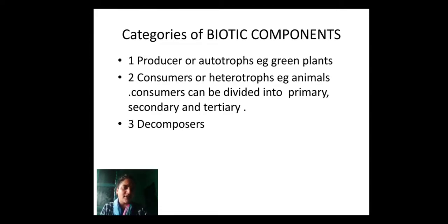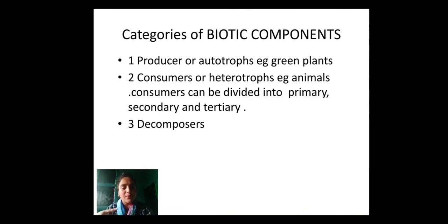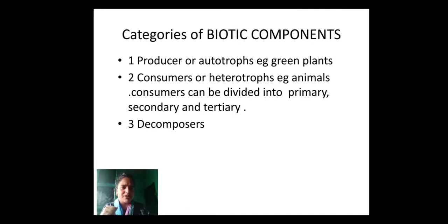Next, we have consumers, or heterotrophs. Example: animals. All the organisms which cannot prepare their own food and depend upon plants directly or indirectly for food are called consumers. They are also called heterotrophs. These consumers are also of three types: primary consumers, secondary consumers, and tertiary consumers.